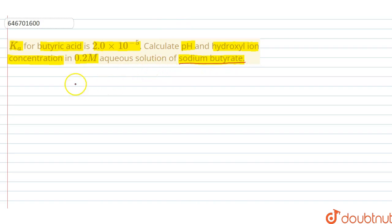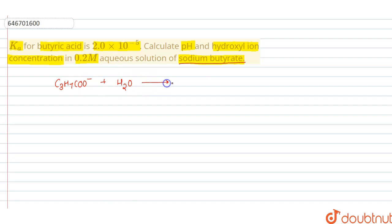We have a 0.2 molar aqueous solution of sodium butyrate. The butyrate ion, C₃H₇COO⁻, coming from sodium butyrate, undergoes hydrolysis with H₂O to give C₃H₇COOH plus OH⁻ ions.